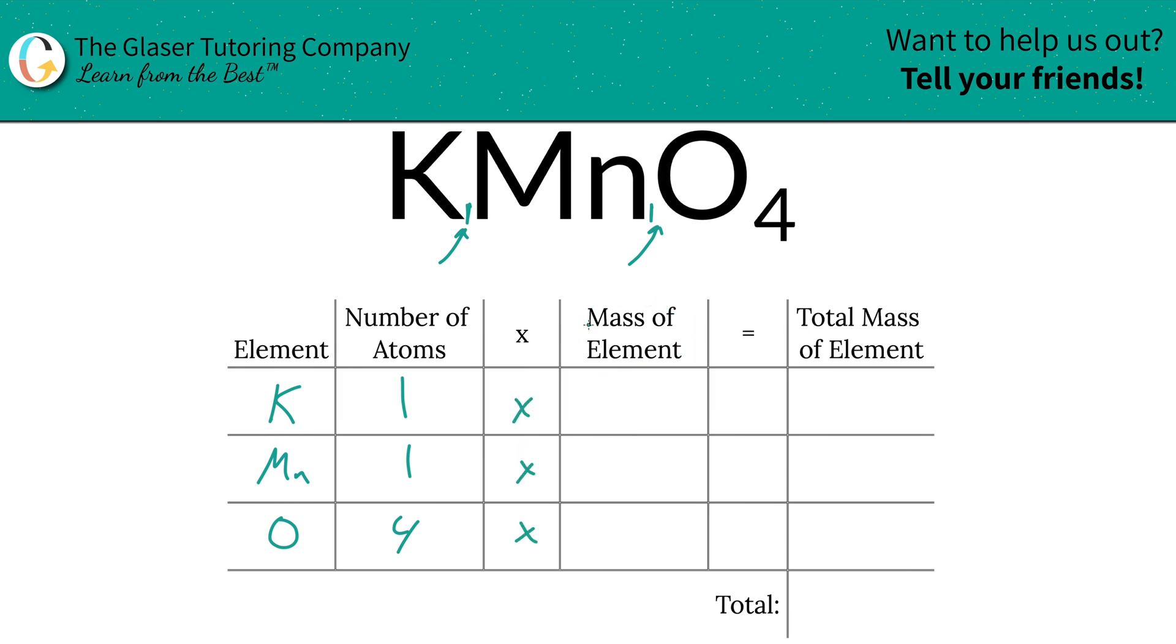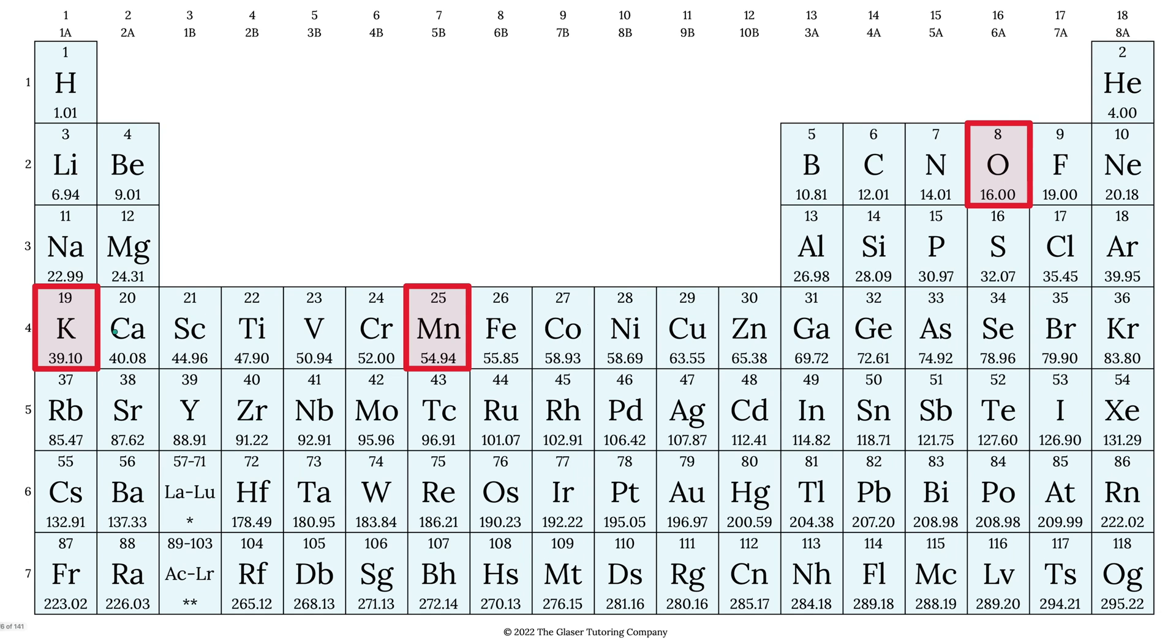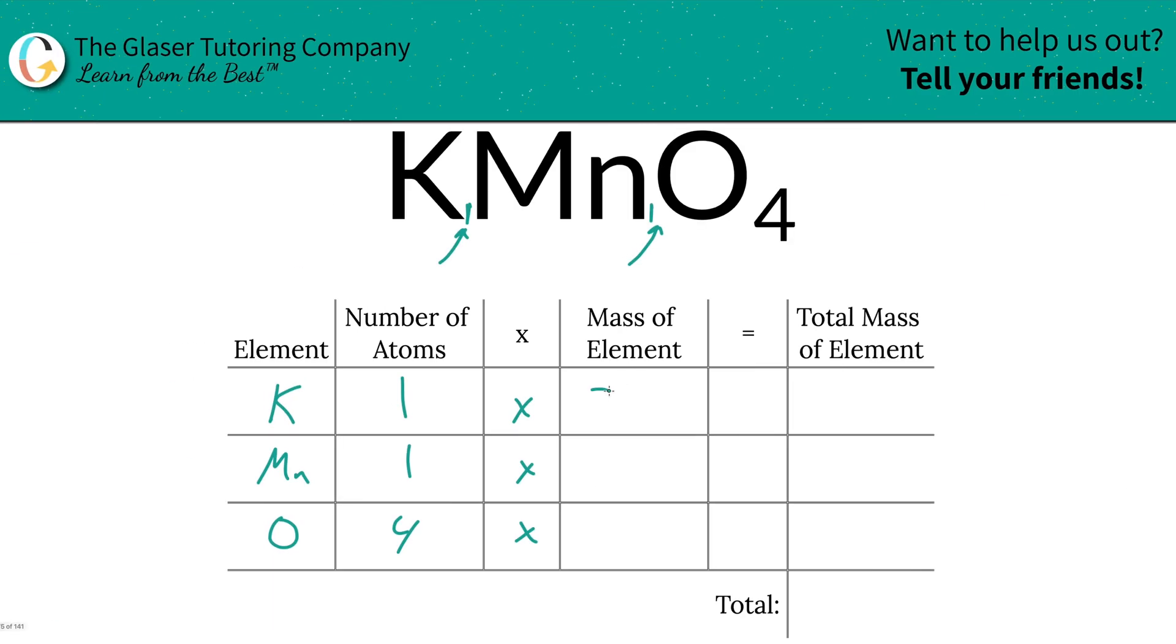Then we're simply going to take those number of atoms and multiply by the mass of the element, and that's where the periodic table comes into play. So potassium's mass is going to be 39.10, manganese is 54.94, and oxygen is going to be 16.00.